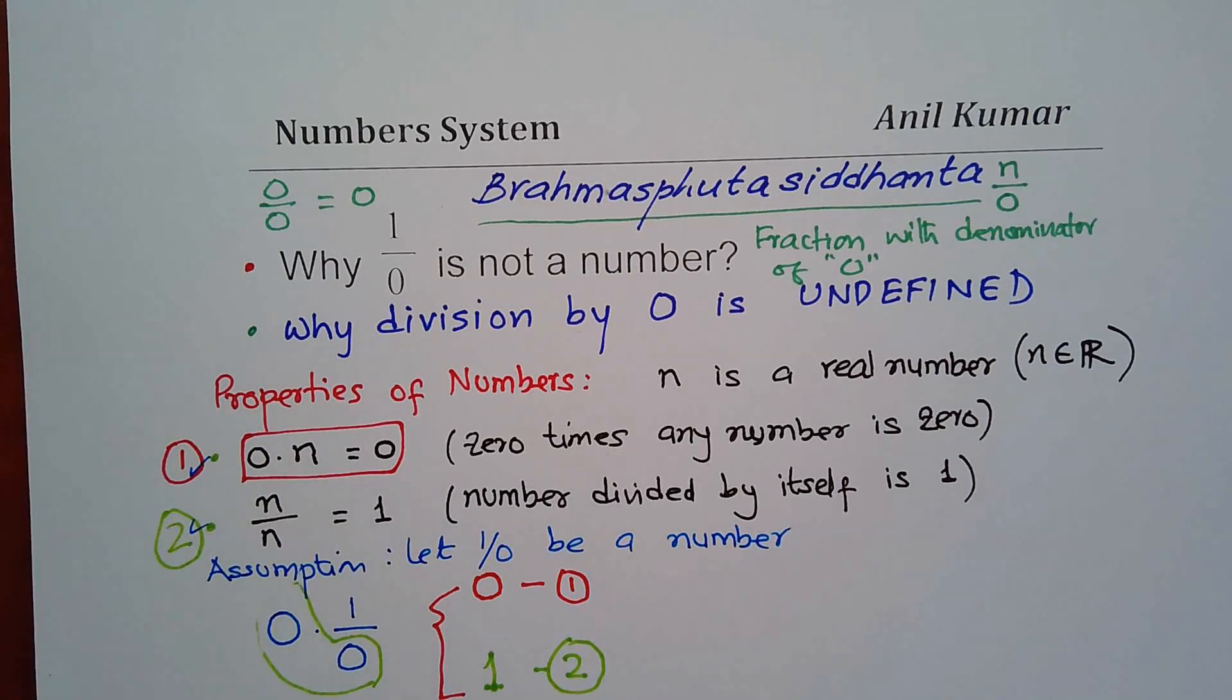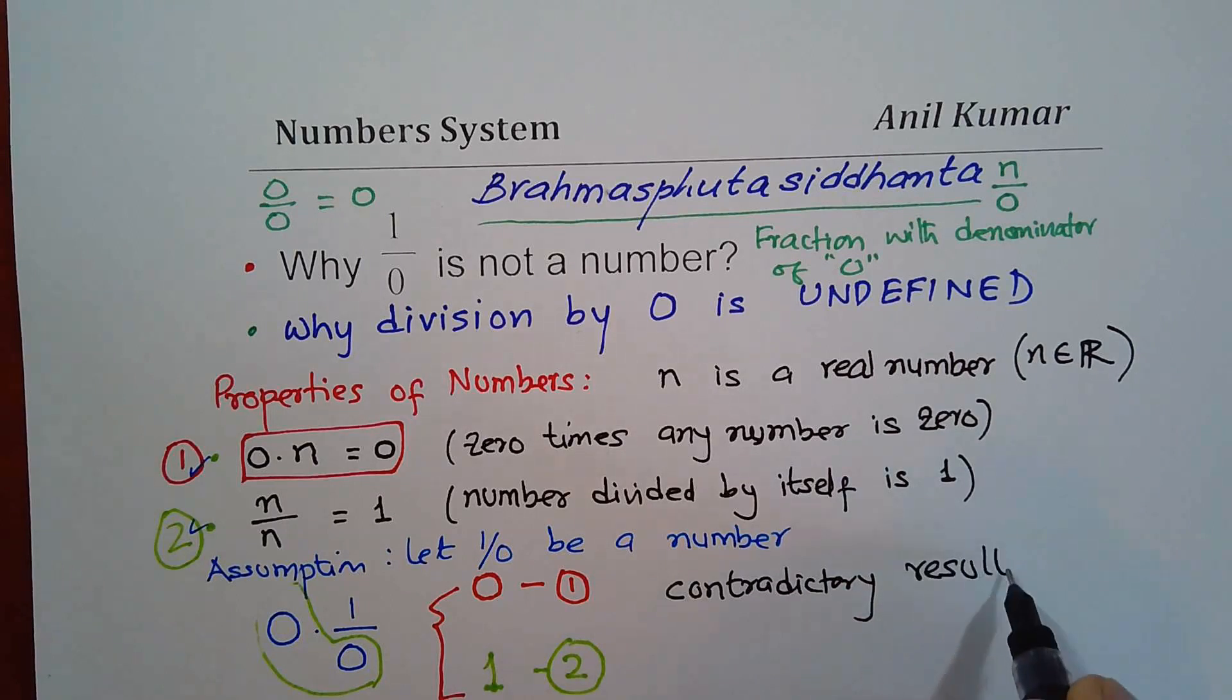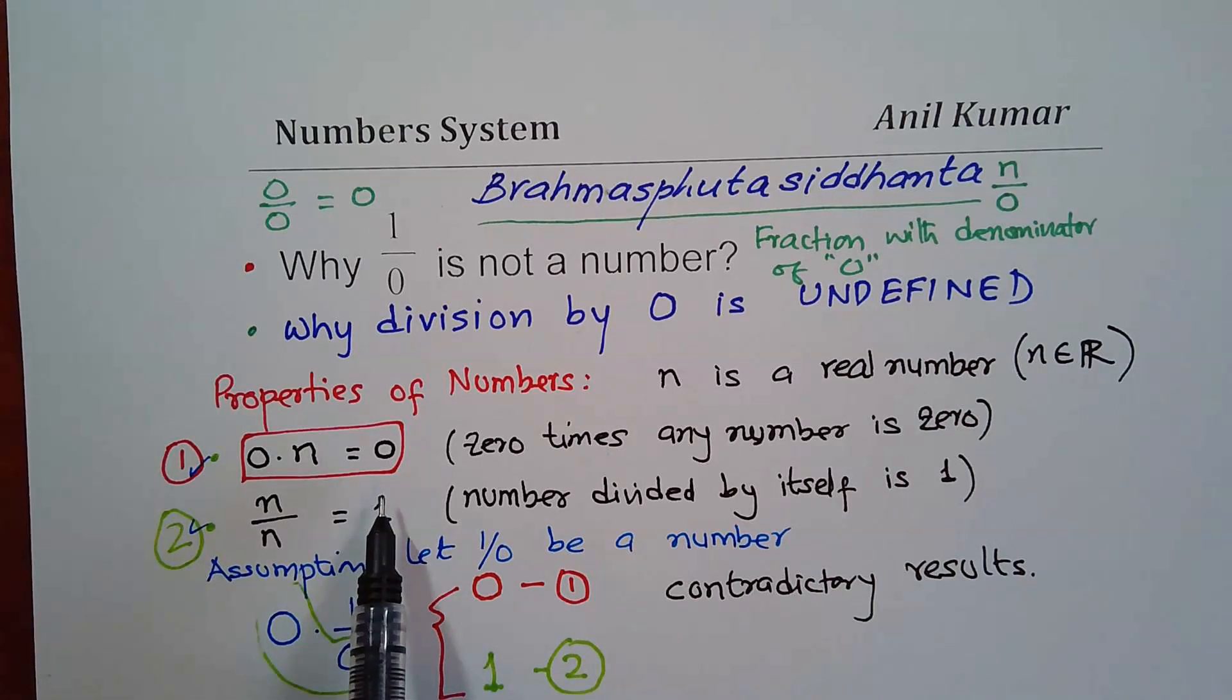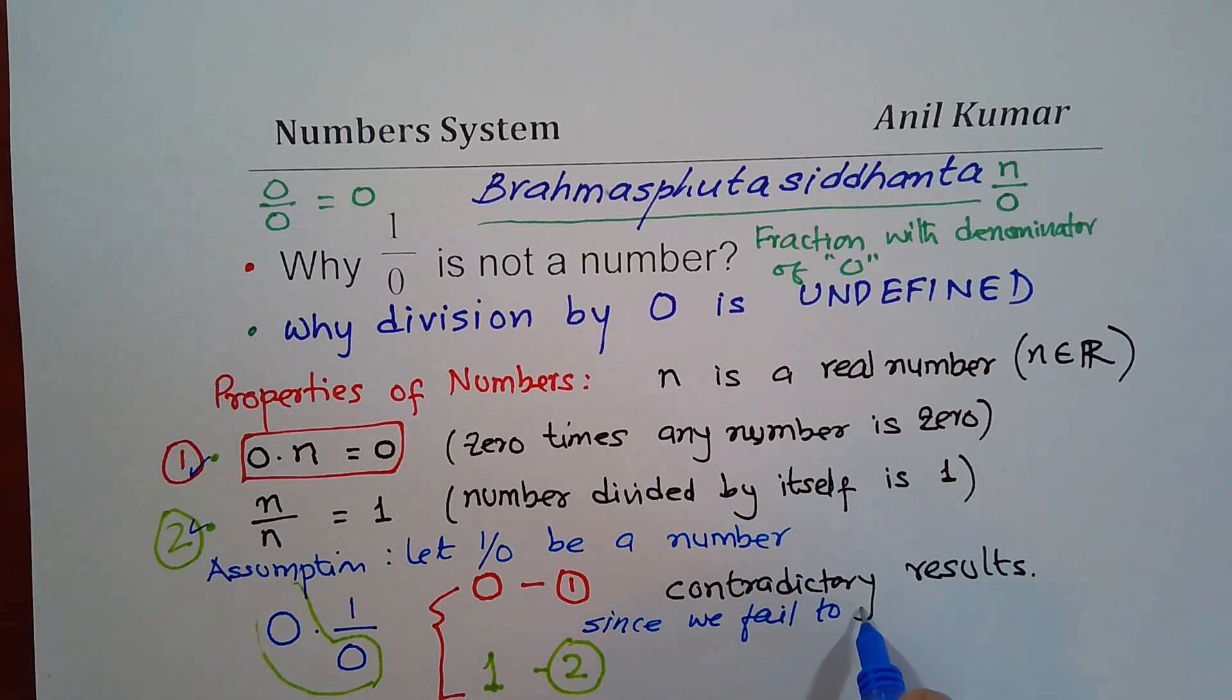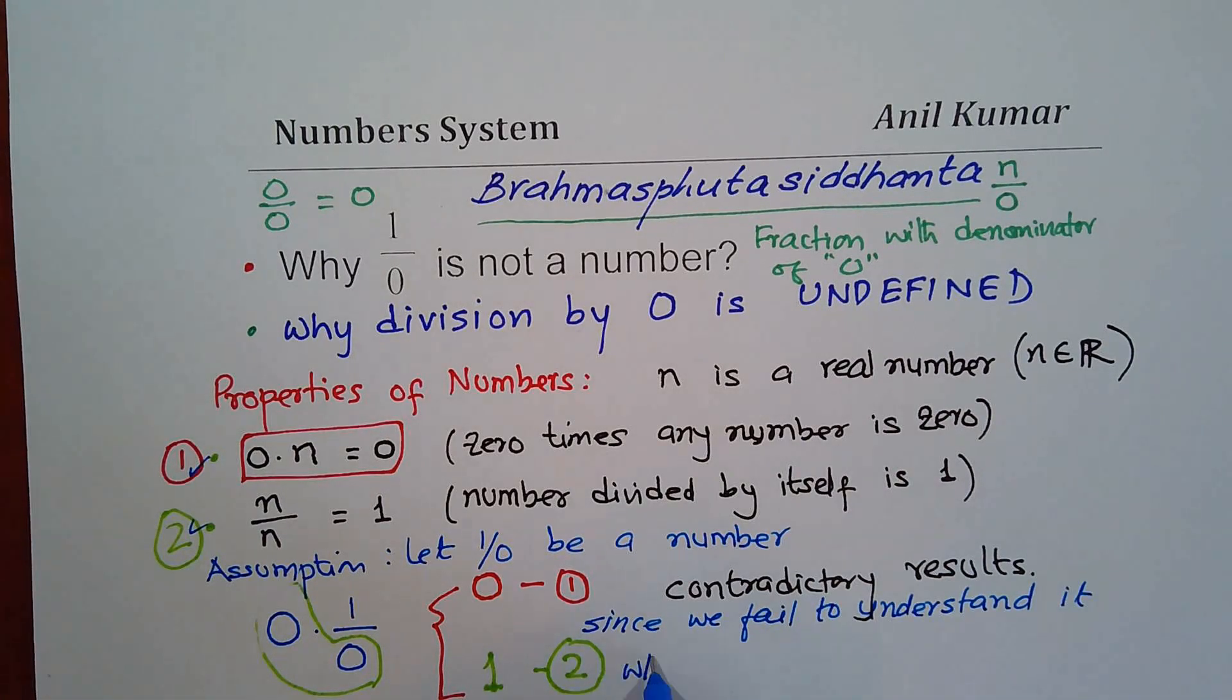So what we realize is that working with 1 over 0 gives us ambiguous cases. It's too contradictory. So these are contradictory results. Since we really fail to understand this, I'm not saying that it's not a number. I'm only saying that since, let me write down here. Since we fail to understand it, it is our limitation. Since we fail to understand it, we say that 1 over 0 is not a number.